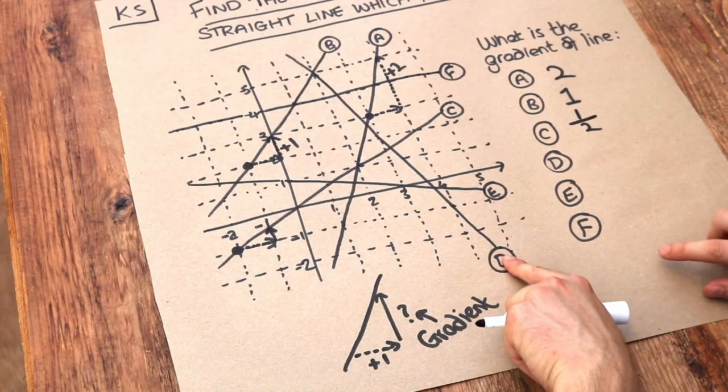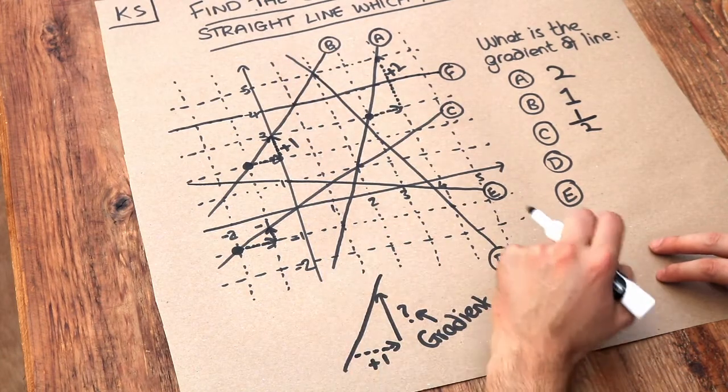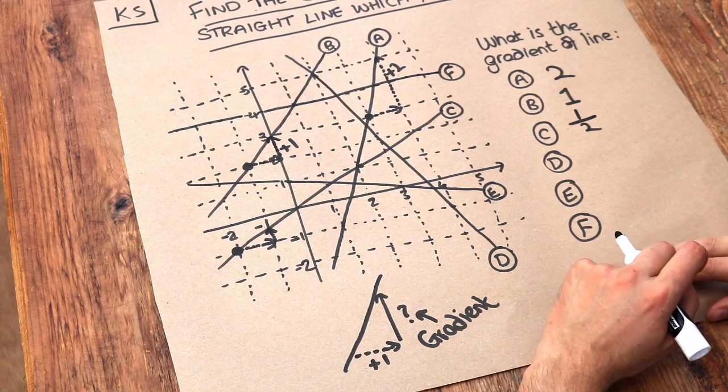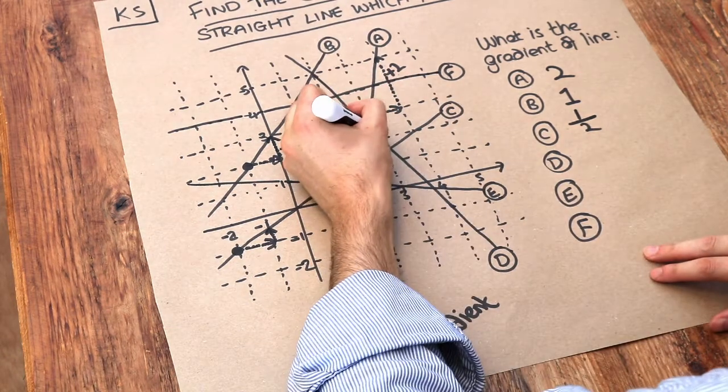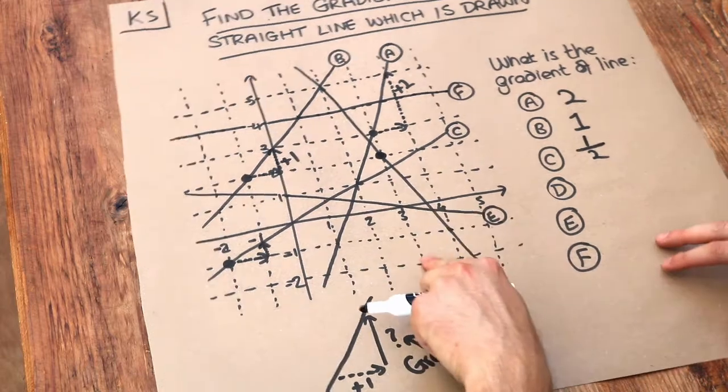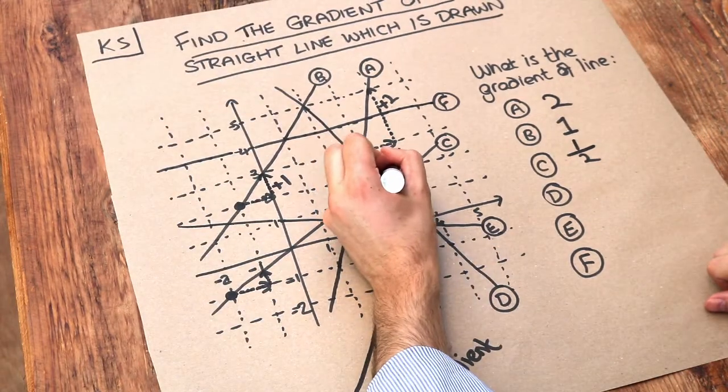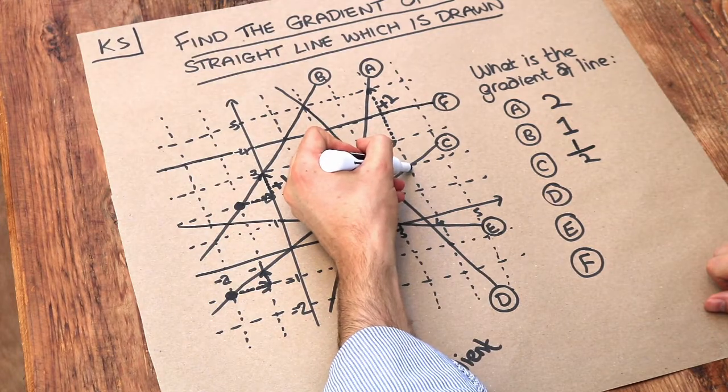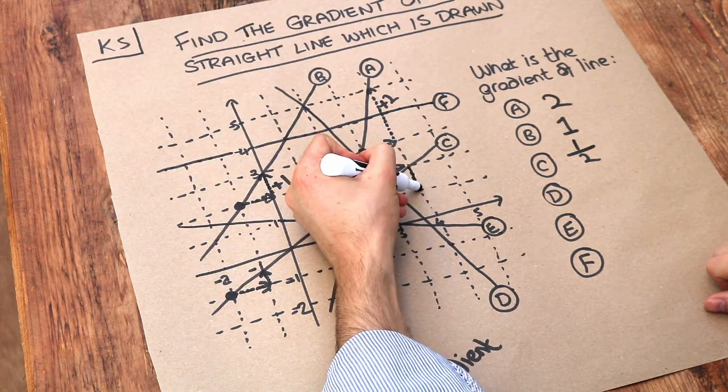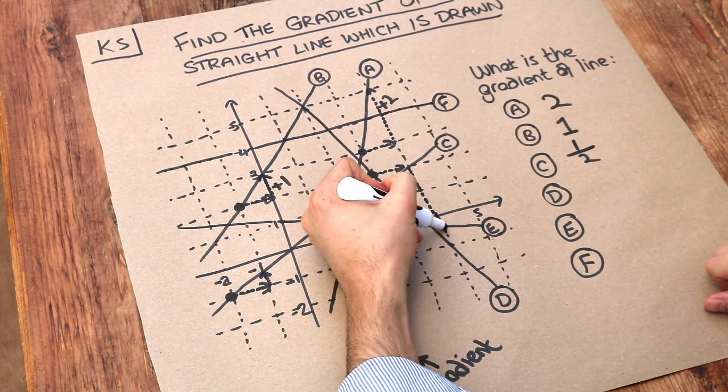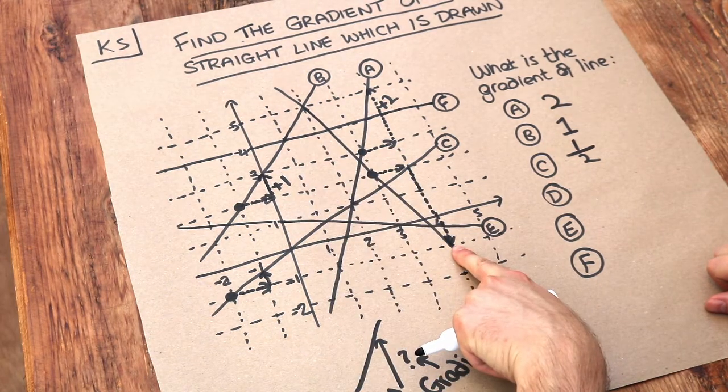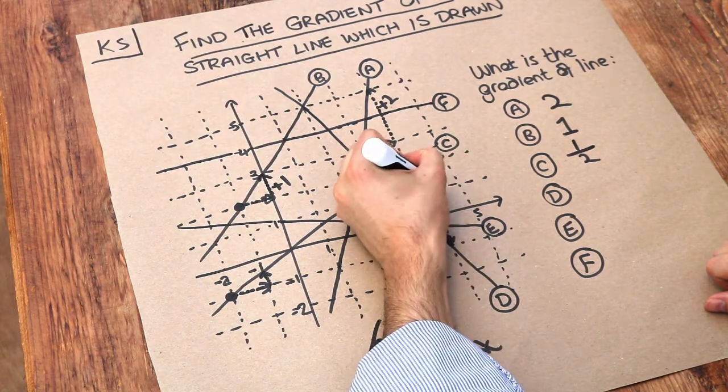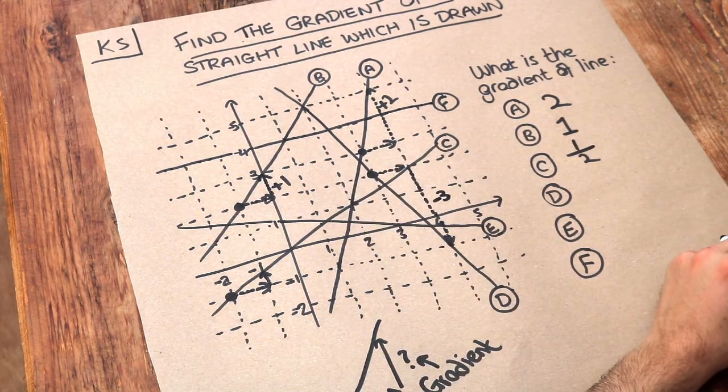What about D? Well this one seems to be going downhill so we expect it to be a negative gradient. Let's pick a particular point. If we start here on a whole number coordinate, if we go right one square, one unit, then how many squares do we have to go down? One, two, three squares before we're back on the line. So we've gone one right and we had to go three down, so the y value changed by minus three.